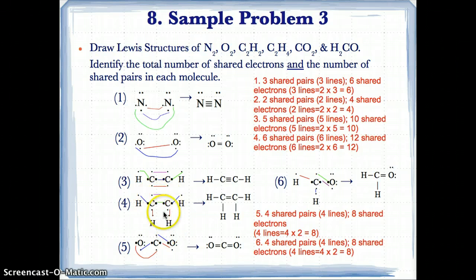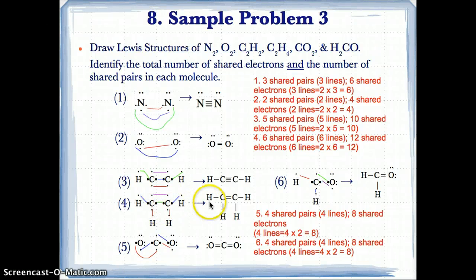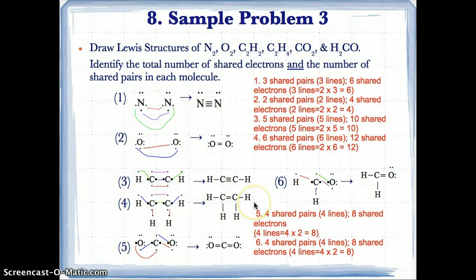After bonding all four Hs, there are two unpaired electrons left on each C, so we pair them up to get four paired electrons between the Cs — two pairs of electrons, or two bonds. We replace these with two clean lines, forming a double bond between the Cs, along with single bonds between each C and its two Hs.